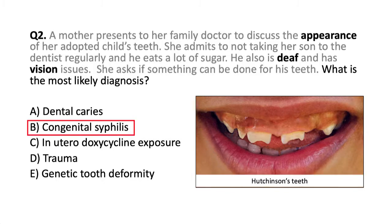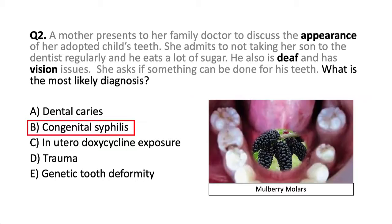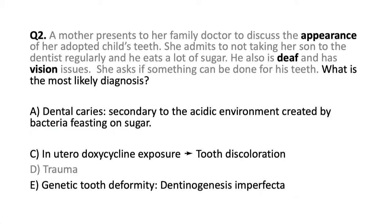The answer is choice B, congenital syphilis. This graphic shows the distinctive Hutchinson's teeth that accompany congenital syphilis, which can also cause deafness and vision issues. As a reminder, mulberry molars are the other oral pathology finding present in congenital syphilis.